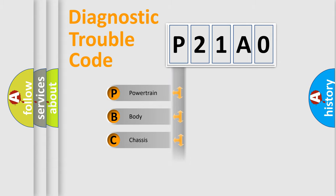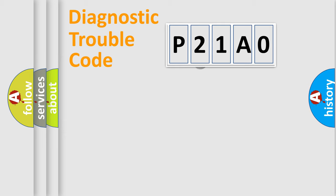We divide the electric system of automobile into four basic units: powertrain, body, chassis, and network. This distribution is defined in the first character code.